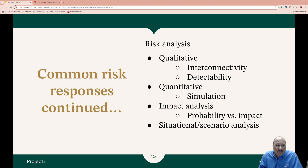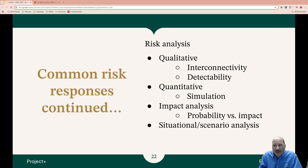Quantitative risks are something we can apply a number to — we can put mathematics in play, simulate it, and look at the impact analysis: what's the probability versus the impact. We look at probability as low, moderate, or high, and the impact the same. We worry more about something that's high probability and high impact than if it's low probability and low impact. We evaluate how a project would be affected by simulating it or doing a scenario.